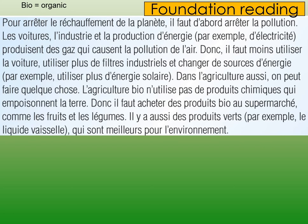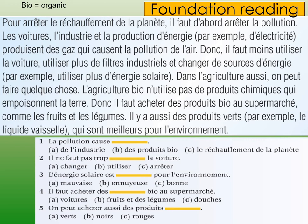You could translate it word for word if you wanted to, just to check you understand the vocabulary from today. But I just want you to get a general gist. Now you've done that, have a good go at this activity — write 1 to 5 and then write A, B or C for the correct answer. If you're needing some help with translating and working things out, continue the video once you've had a little go. Let's have a look at the first one: pollution causes — is it industry, organic products, or global warming? Well logically, pollution doesn't cause industry or organic products — it causes global warming.